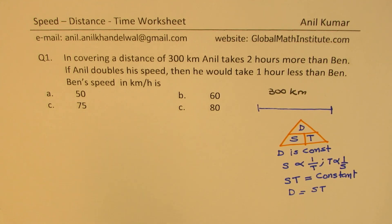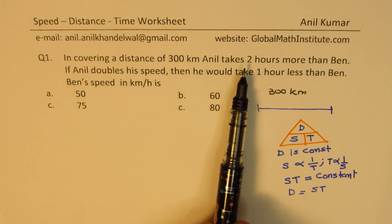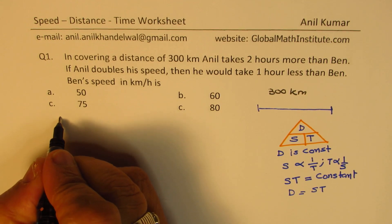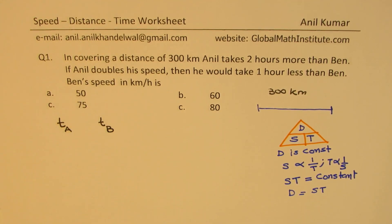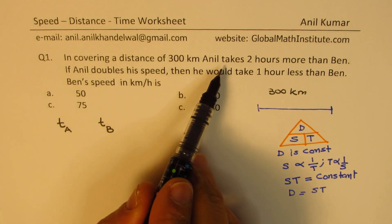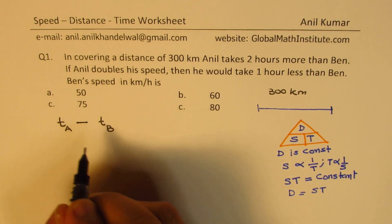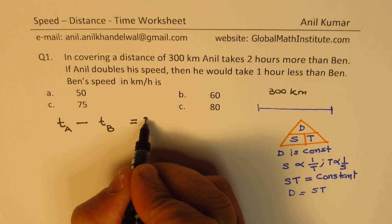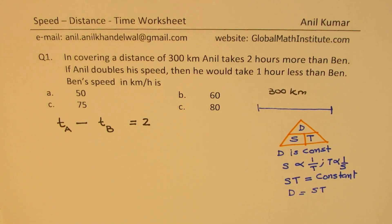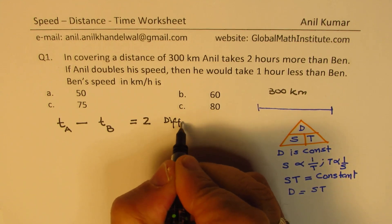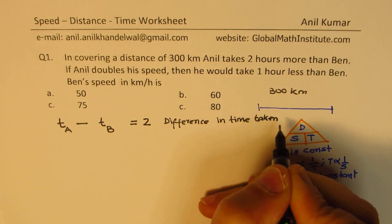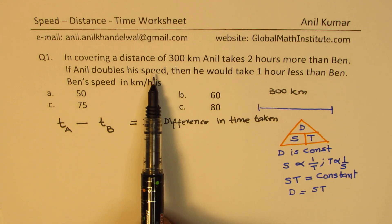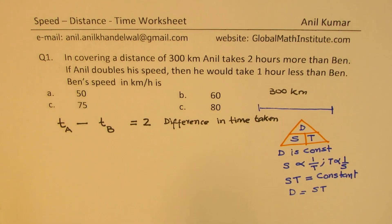Now let's see how to solve this question. Let's say the time for Anil is T_A and the time for Ben is T_B. In covering 300 kilometers, Anil takes two hours more than Ben, so the difference T_A minus T_B equals 2. That is our first equation — the difference of their times.